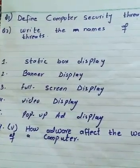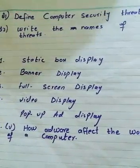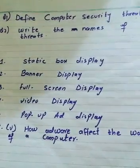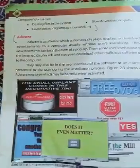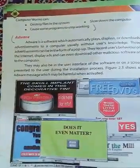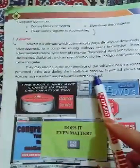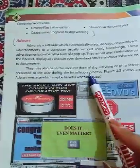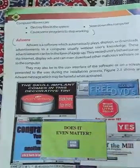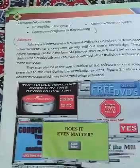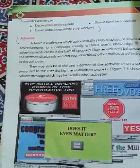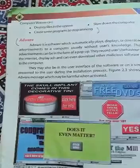You watch some videos and then there is pop-up ad display. Sometimes we have pop-ups — on YouTube, for example, during videos you get different types of advertisements. All of these are part of adware. This may be in the user interface or the software on a screen presented to the user during the installation process. You can also get a lot of advertisements during installation when you install different types of software on your computer.